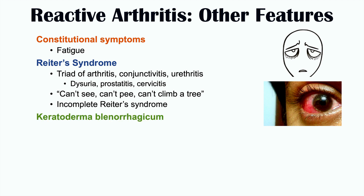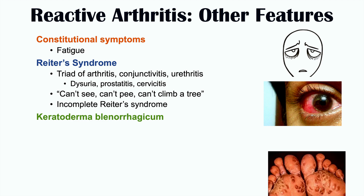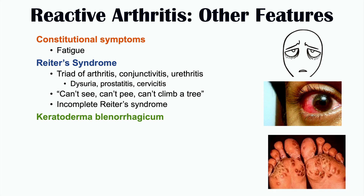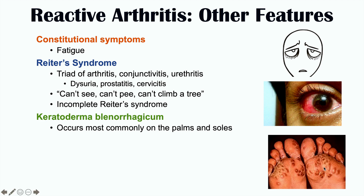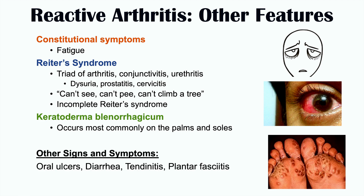Another finding that can occur in patients with reactive arthritis is keratoderma blennorrhagicum, which occurs most commonly on the palms of the hands and the soles of the feet. Other signs and symptoms of reactive arthritis include oral ulcers, diarrhea, tendonitis, and plantar fasciitis.